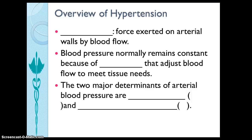Number three has two blank areas — I will ask you to complete it. The two major determinants of arterial blood pressure are: the first is cardiac output, or systolic pressure, and peripheral vascular resistance, or diastolic pressure.